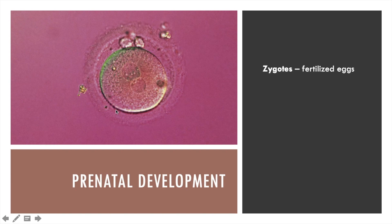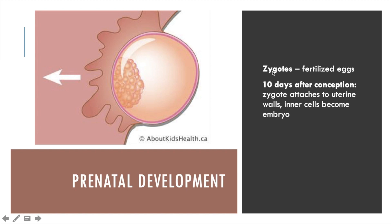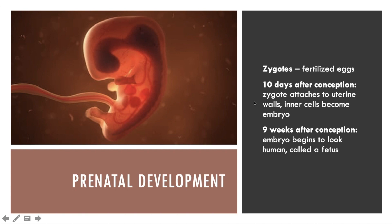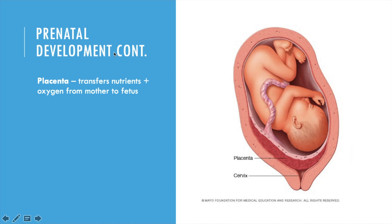Prenatal development. Fertilized eggs are called zygotes. Ten days after conception, the zygote attaches to the mother's uterine wall, and the zygote's inner cells become the embryo — basically a tiny baby human. Organs begin to form and function, and the heart begins to beat over the next six weeks. Nine weeks after conception, the embryo begins to look human and is called a fetus. The placenta transfers nutrients and oxygen from the mother to the fetus and also filters out harmful substances. But some harmful substances, known as teratogens — which can be drugs or viruses — can slip by the placenta.